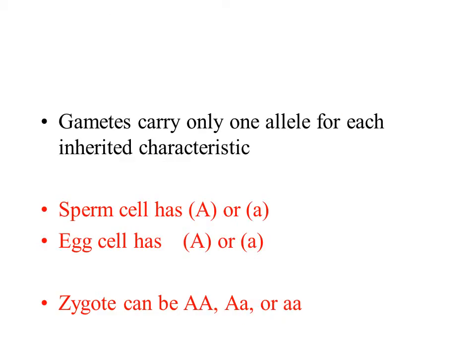Gametes carry only one allele for each inherited characteristic. For example, the sperm cell will only have either a big A or a little a. The egg would only have a big A or a little a. But the zygote, which is a union between sperm and egg, will have both.